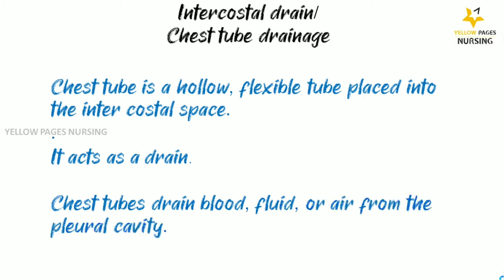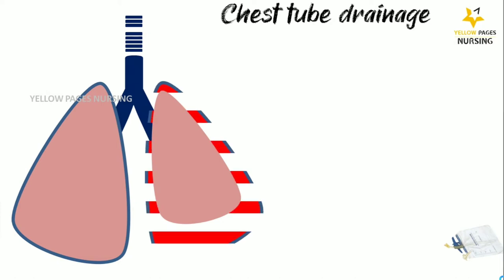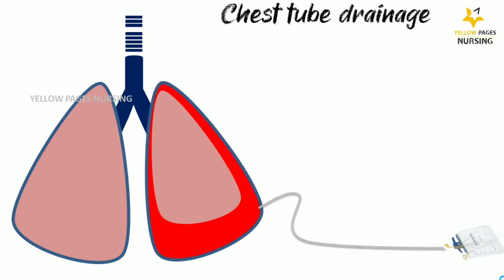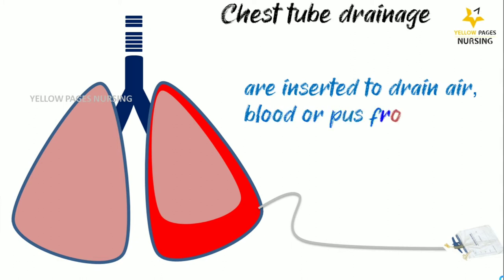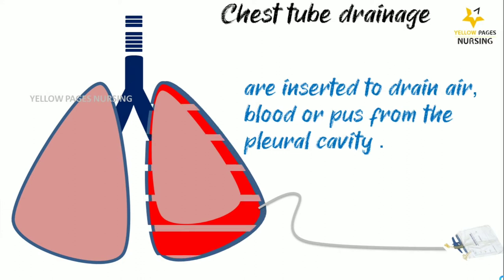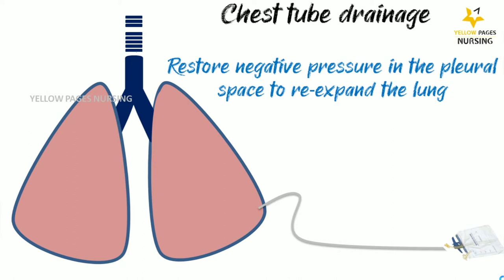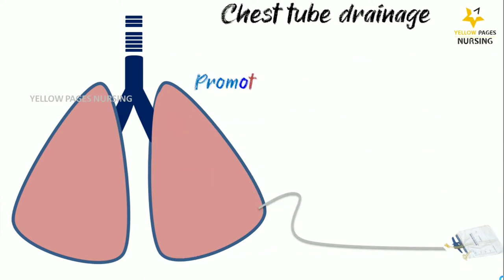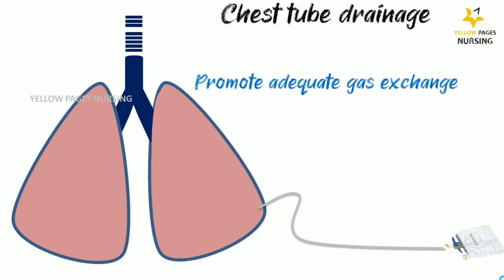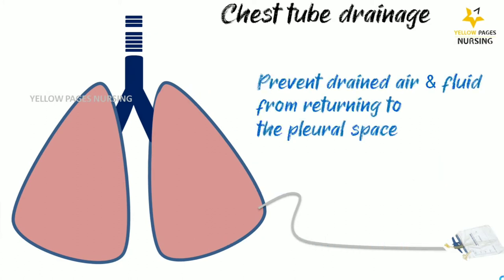Now let's look at the important functions of chest drains. Underwater seal chest drains are inserted to allow air, blood, or pus to drain from the pleural cavity. It restores negative pressure in the pleural space to re-expand the lung, promotes adequate gas exchange, and prevents drained air and fluid from returning to the pleural space.